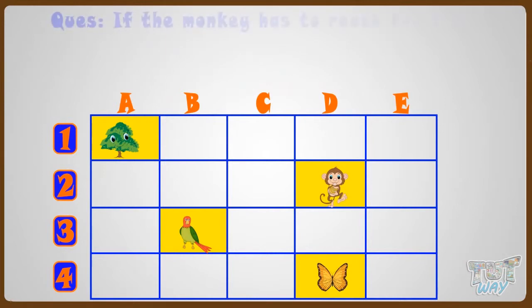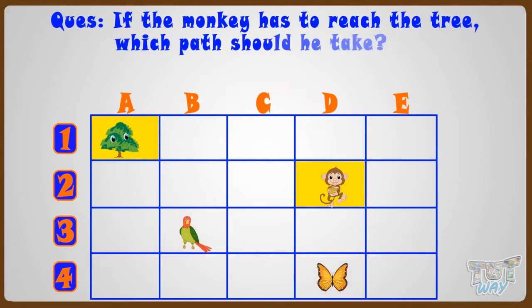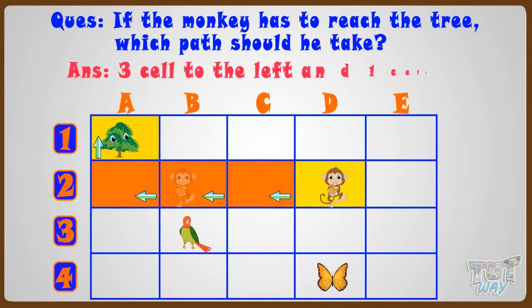If the monkey has reached the tree, which path should he take? He should move 3 cells to left and then 1 cell up to reach the tree. So its path should be 3 cells left and then 1 cell up.